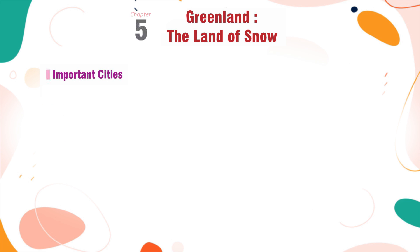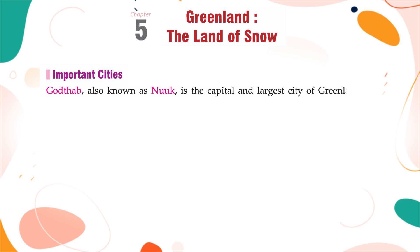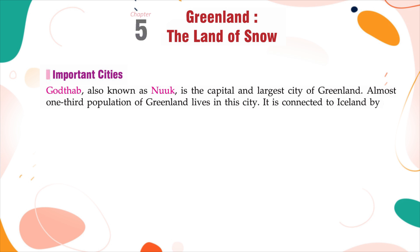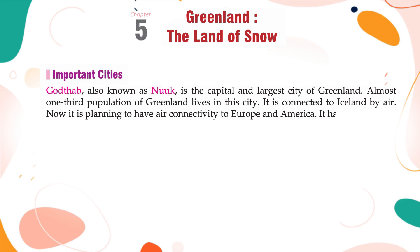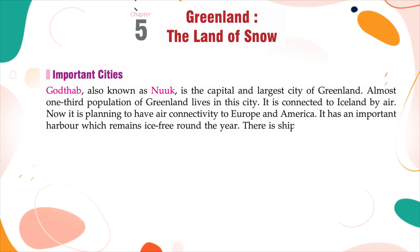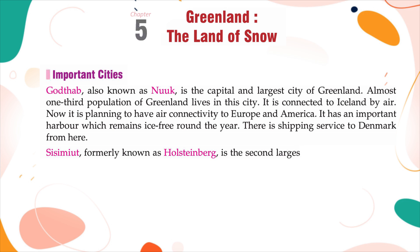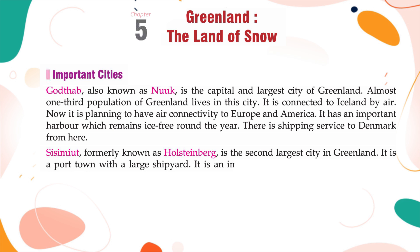Important Cities: Gothab, also known as Nuuk, is the capital and largest city of Greenland. Almost one-third of Greenland's population lives here. It is connected to Iceland by air and plans to have air connectivity to Europe and America. It has an important harbor which remains ice-free throughout the year, and there is a shipping service to Denmark. Sisimiut, formerly known as Holsteinsborg, is the second-largest city in Greenland — a port town with a large shipyard and an important fishing and industrial center.